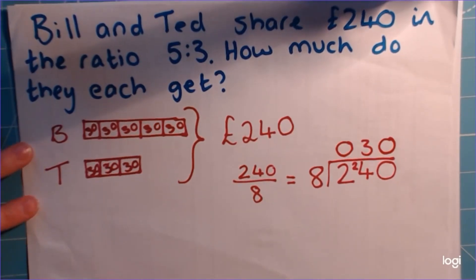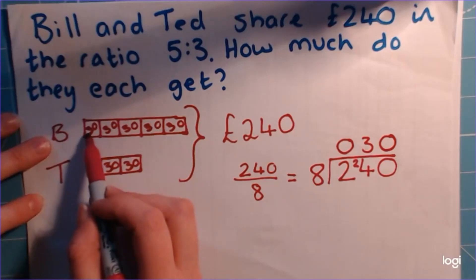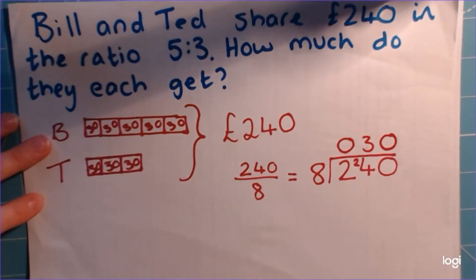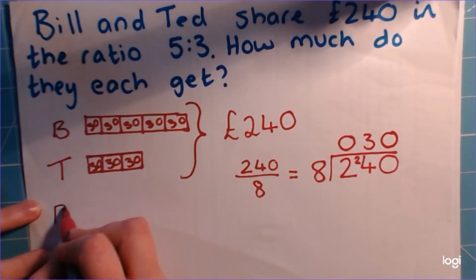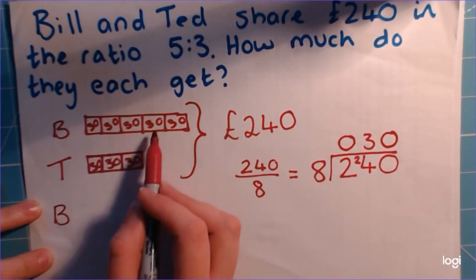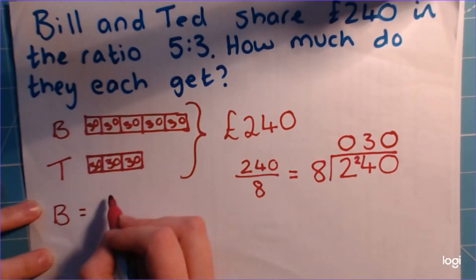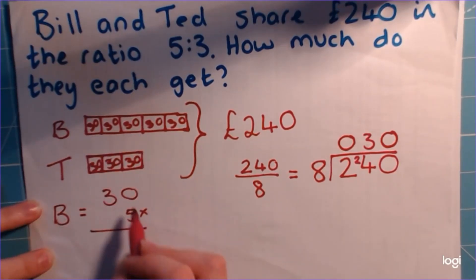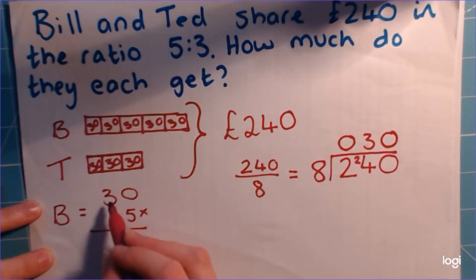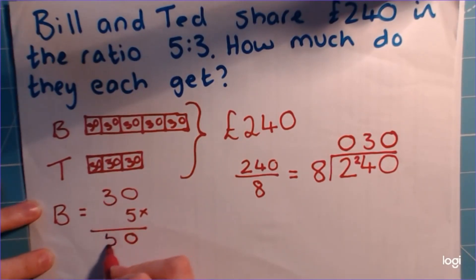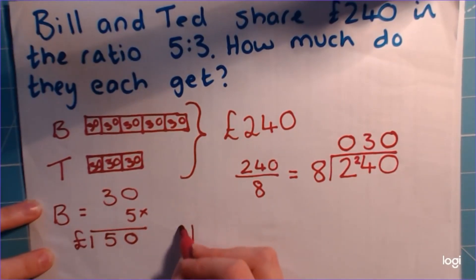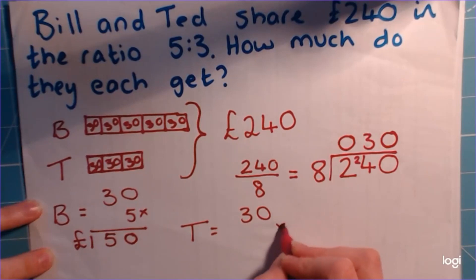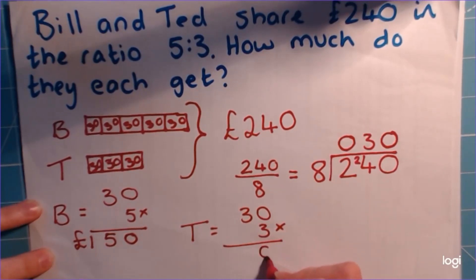And now it's really lovely because we can see that Bill gets 5 lots of 30. There are different ways of doing it — we could add them up, but the faster way is 30 times 5, which gives us 150. So Bill is going to get £150. Ted is going to get 30 times 3, which gives us 90.